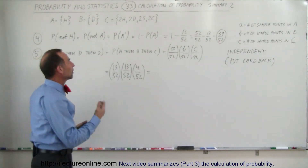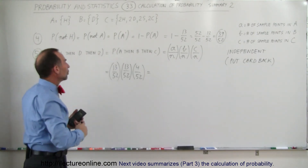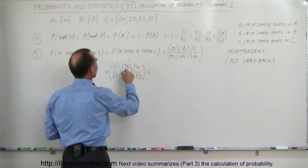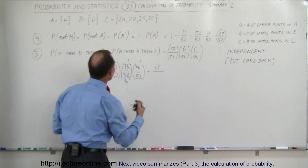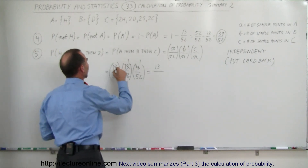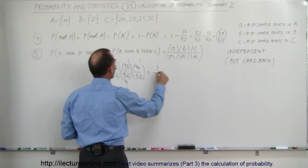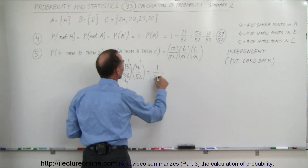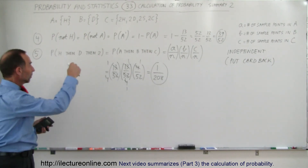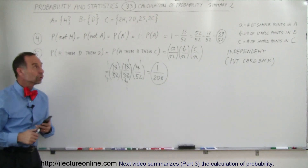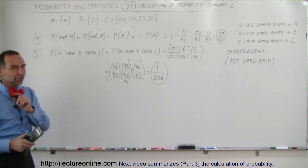That is the probability of pulling first a heart, then a diamond, then a 2. We can simplify: 13/52 simplifies to 1/4, and the 4s cancel, leaving 1 in the numerator. The denominator becomes 4 times 52, which is 208. So the probability is 1/208. That is the probability of those three events happening in a row. Those are the next two examples of how to calculate probabilities of a specific type, and there's more to come.